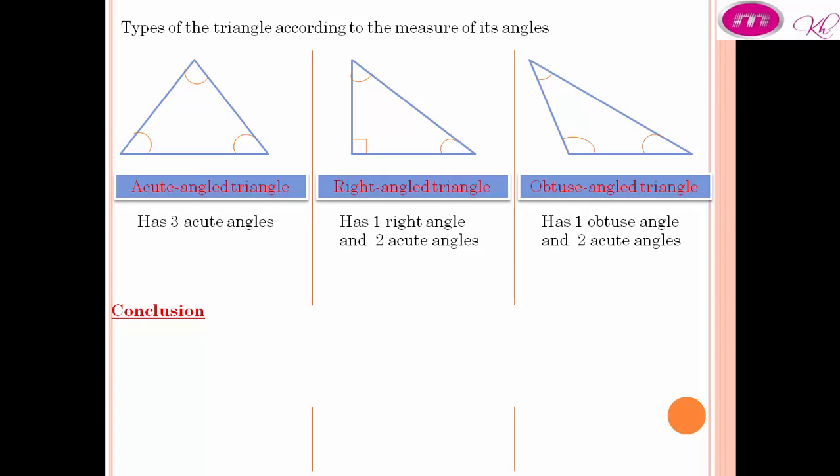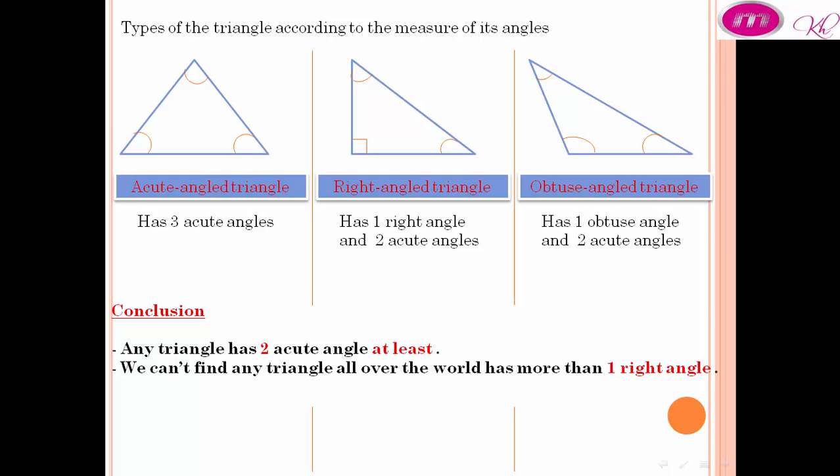Conclusion. Any triangle has 2 acute angles at least. We cannot find any triangle all over the world that has more than 1 right angle. We cannot find any triangle all over the world that has more than 1 obtuse angle.